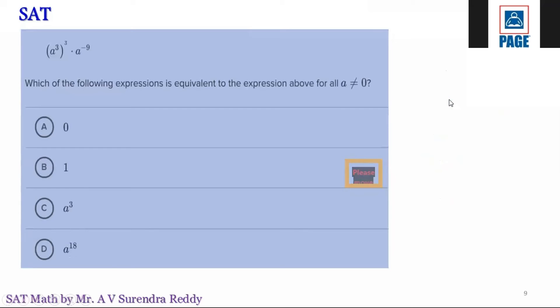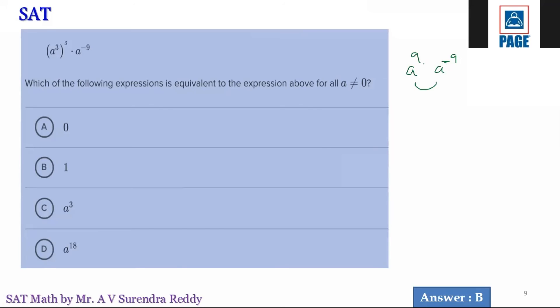Next question. So here (a^3)^3 is a^9 · a^(9-9). If bases are same, powers are equal, powers are added. Powers are added means anything power 0 is 1. Such an easy question.